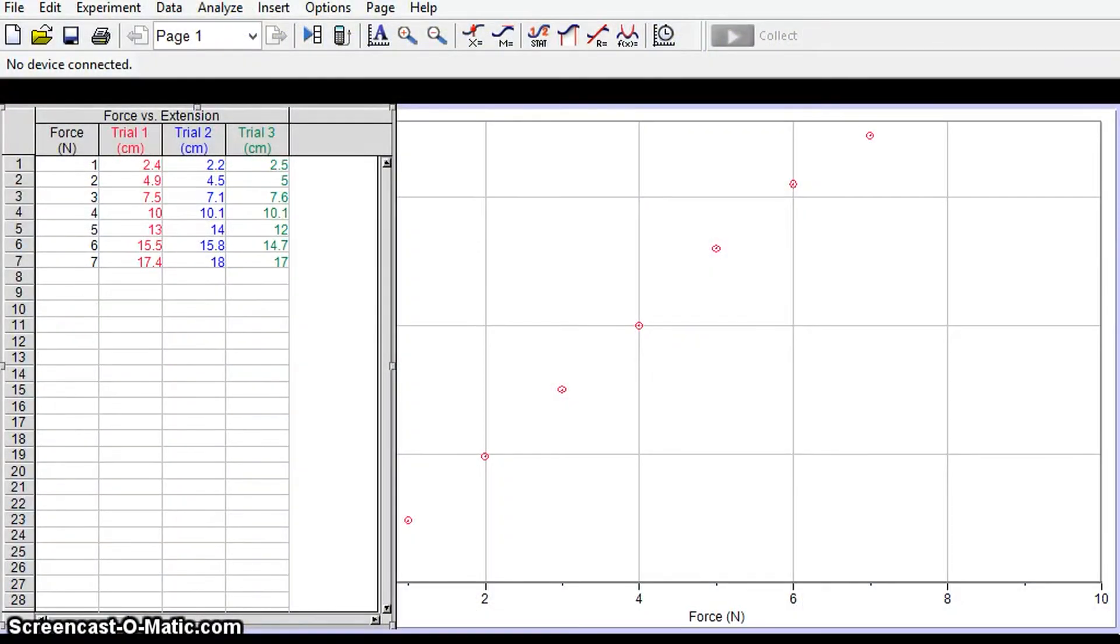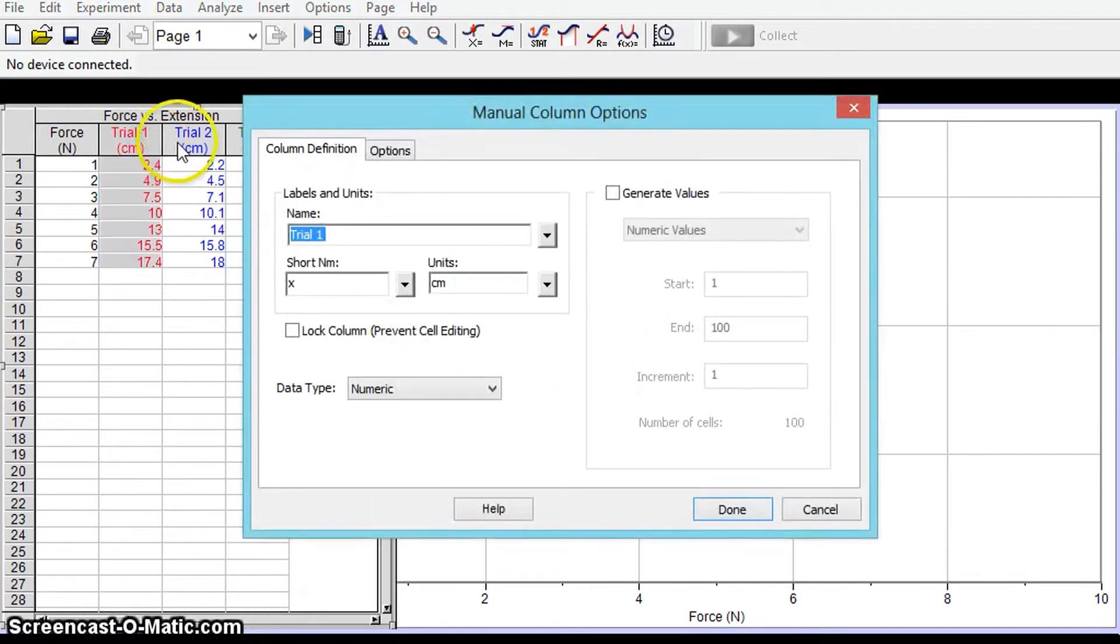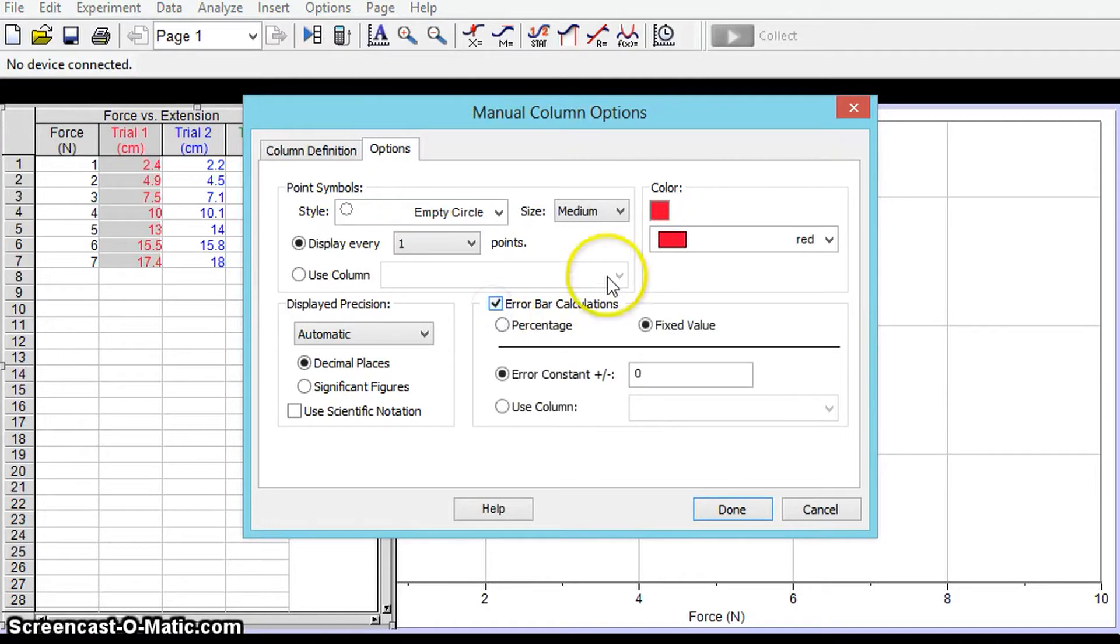In this video I want to show you how easy it is using Logger Pro to customize your error bars. If we double click on one of the column headers we can see that under the options tab we can quite easily include fixed values for error bars or even percentage values for error bars, but also there is an option to use a column as well.